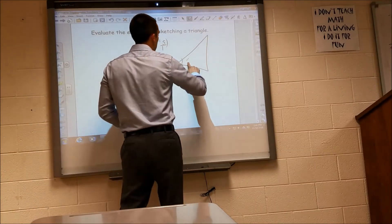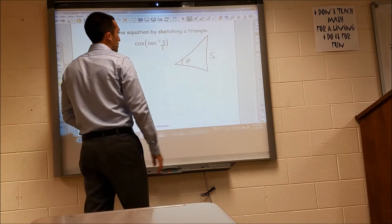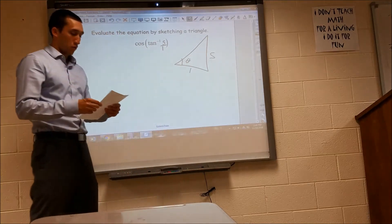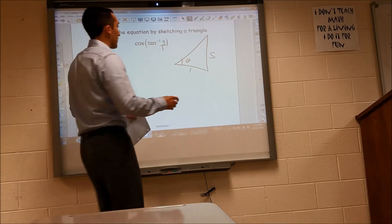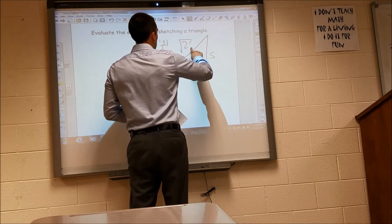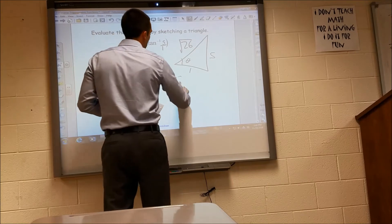Adjacent then is length 1. And if you go ahead and do the Pythagorean Theorem, you're going to get that your hypotenuse is radical 26. So let me do that real quick.